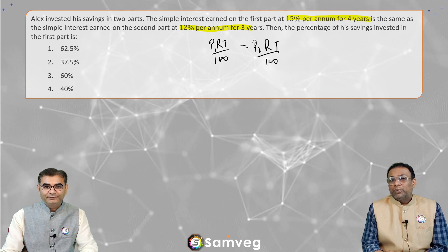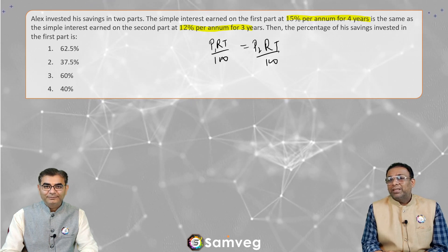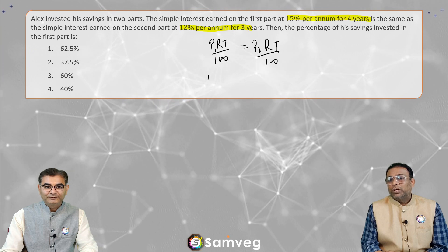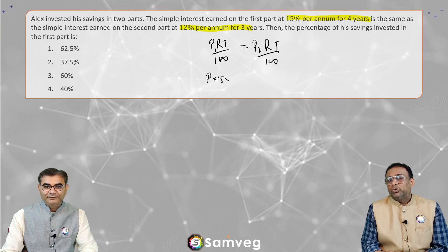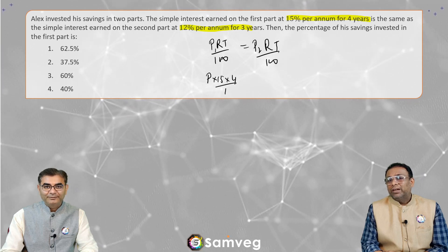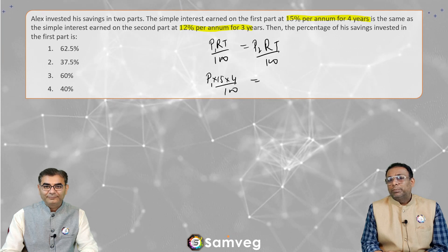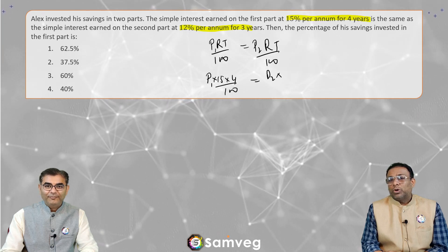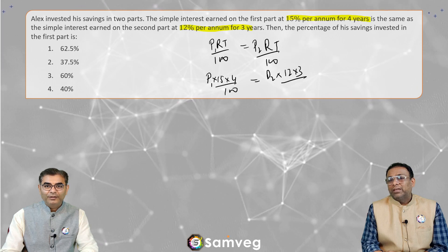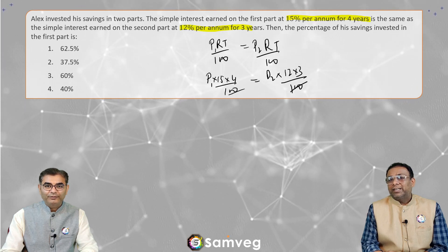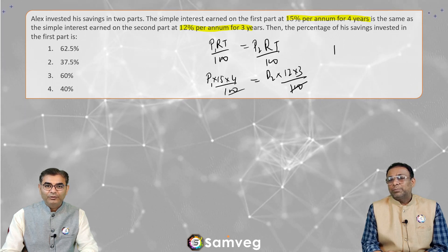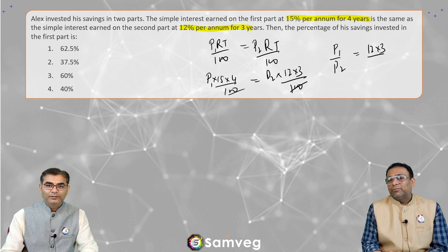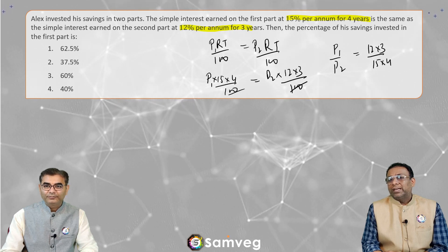We know r and t, just not P. Rate of interest and time period are given. So: P1 into 15 into time period 4 divided by 100. That is equal to P2 into rate of interest 12 into 3 divided by 100. The 100s cancel out. So here we get P1 by P2.